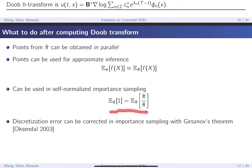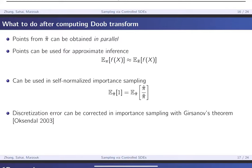One issue that we won't discuss in detail is the discretization error when simulating the SDE. In approximate inference it's not as big a worry, but for importance sampling you do have to correct for it, and one way is to apply the Girsanov formula from stochastic calculus.